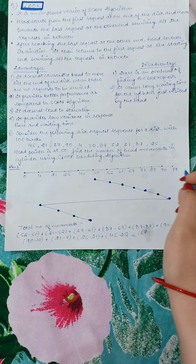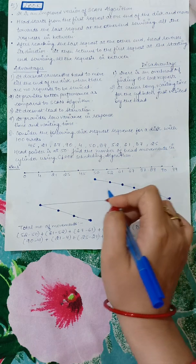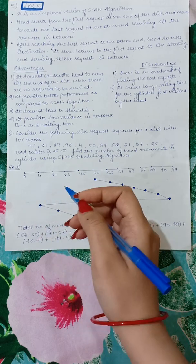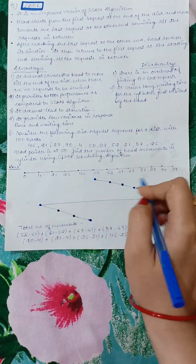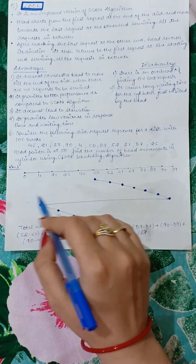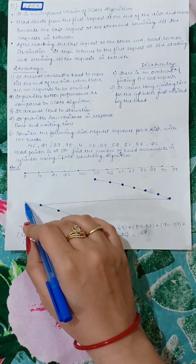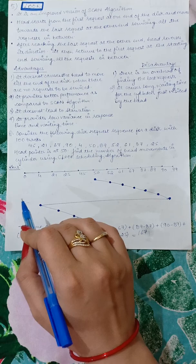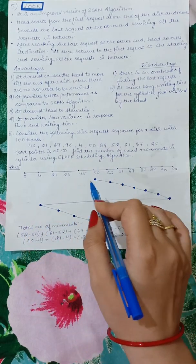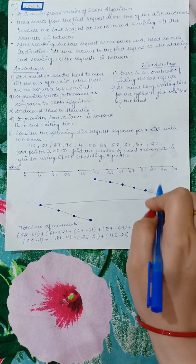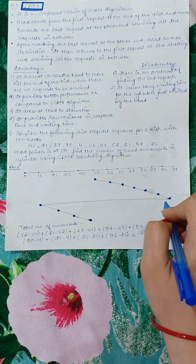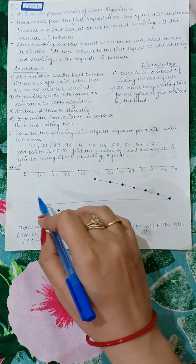In SCAN algorithm, you have to scan till the end of the disk, reverse the direction, and then continue scanning. In C-SCAN (circular scan), you go to the end of the disk, then on the reverse direction no request will be serviced. You reach the other end of the disk (0 in this example) and then start servicing the disk again. When we talk about LOOK algorithm, instead of going to the end of the disk, we go to the last request. In simple LOOK, you go to the last request, reverse the direction of the head, and then the remaining requests are serviced.